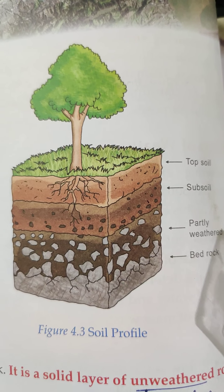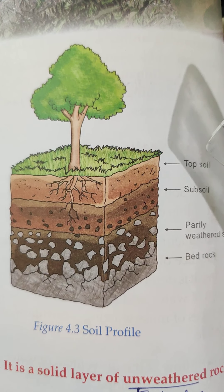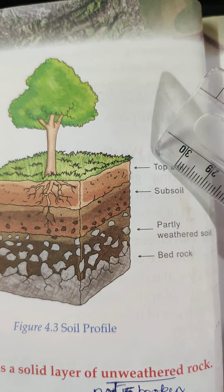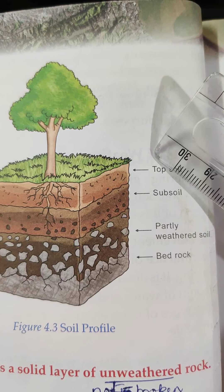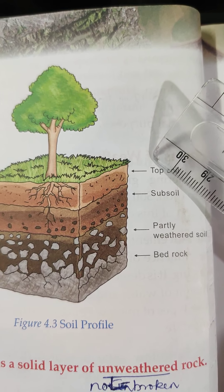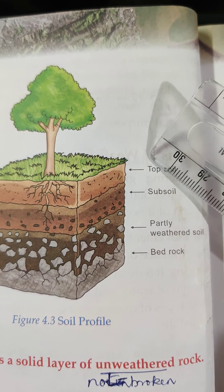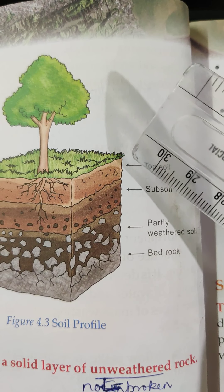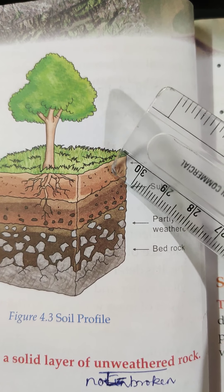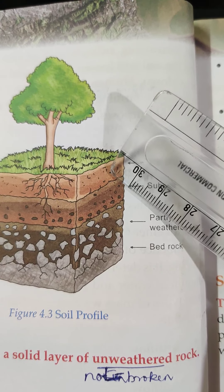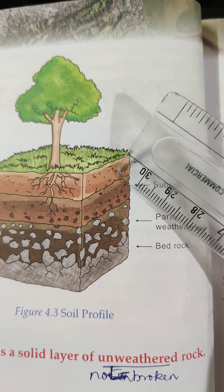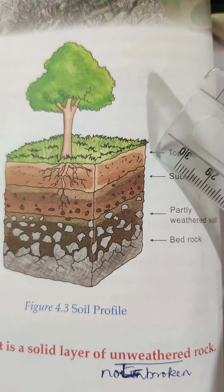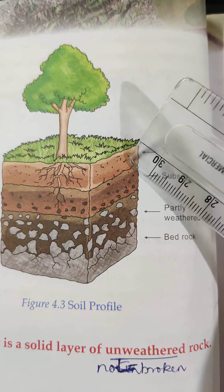This is a soil profile. Topsoil consists of very fine particles of rocks such as clay, silt, and sand. This layer also contains mineral nutrients and humus. The roots of the plants are confined to this layer only.